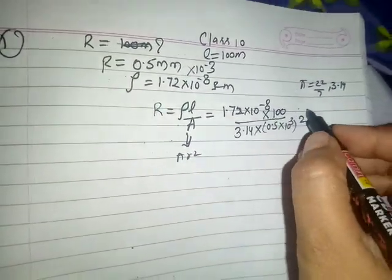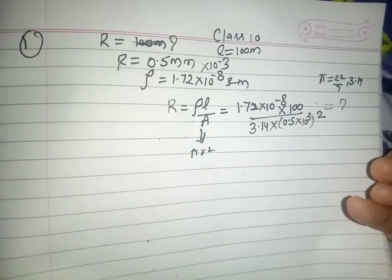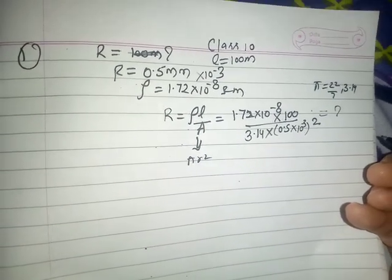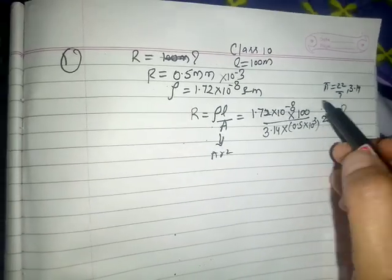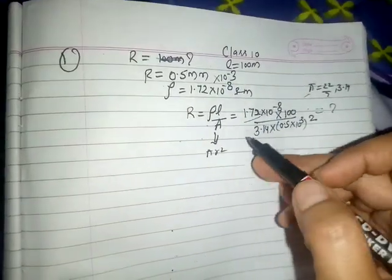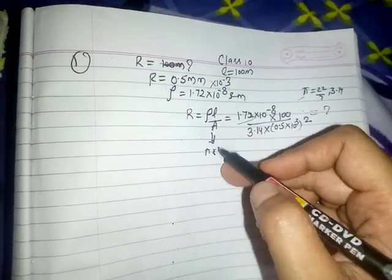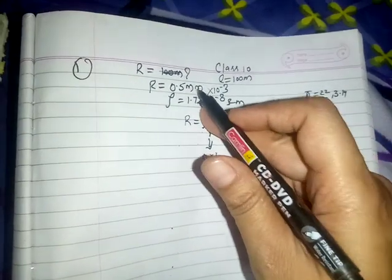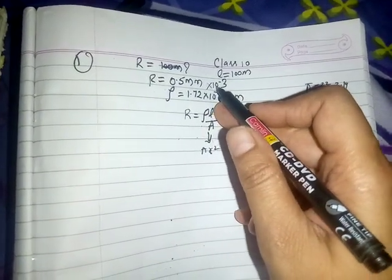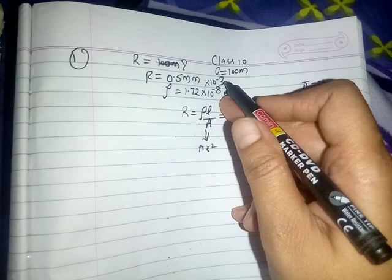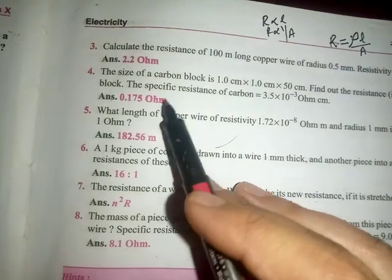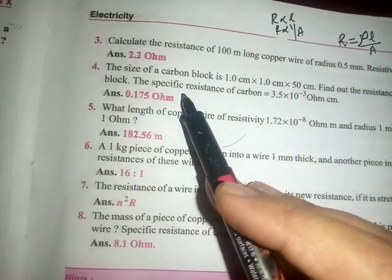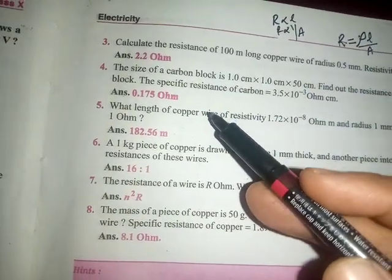Now only algebraic steps are left — solve with these quantities and you will get the answer. The main thing to note is that instead of plain area A, we use pi r squared, and if radius is given in mm you must convert it to meters by multiplying with 10 to the power minus 3.